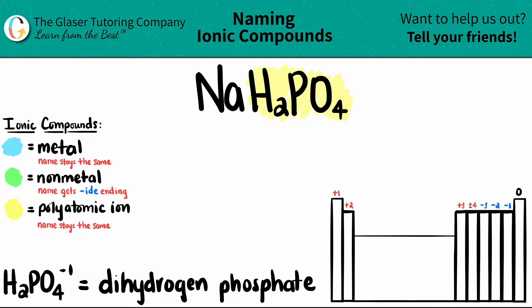Now sodium, which is Na, is a metal. I know that it's a metal because it's over here on the periodic table, in metal territory. Now we're ready to name.